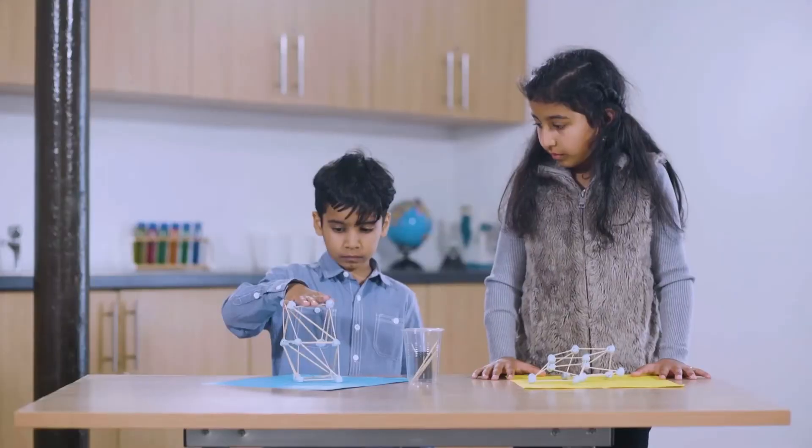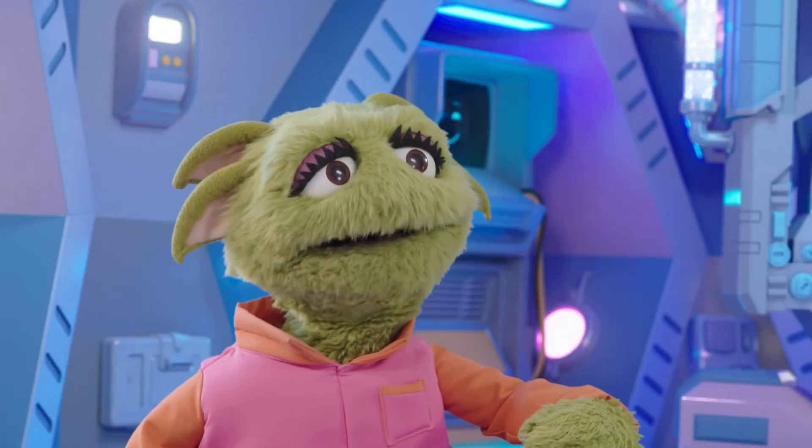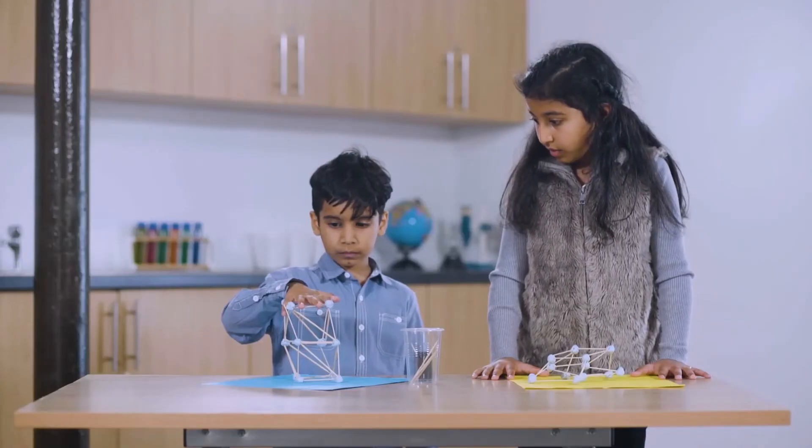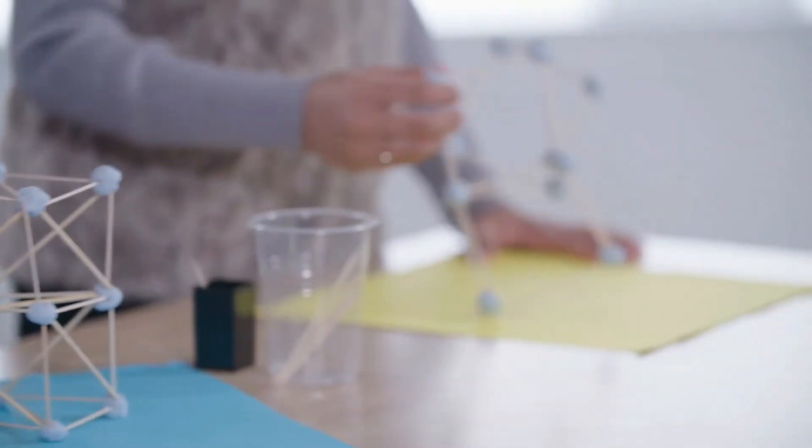Now, Hattie is going to test the one built with triangles. Oh, he's pushing very hard. But see how this tower isn't collapsing? That's because the triangles spread the weight out more evenly than the squares.